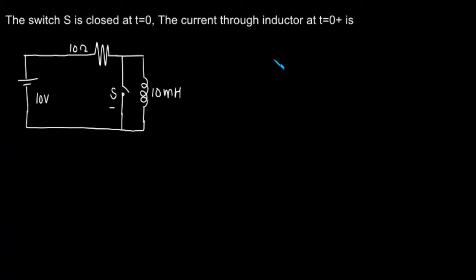This was asked in the electrical GATE paper. The switch S is closed at t equal to zero. The current through the inductor at t equal to zero plus is... So for t less than zero, what will be the circuit?